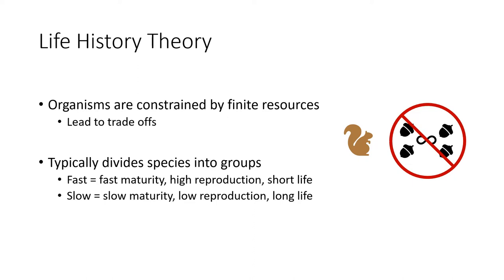Life history theory is typically used to generalize a species' average lifetime, based on the fact that organisms are constrained by a finite amount of resources, which lead to trade-offs where they must decide where to allocate available energy. Typically, species are divided into either fast or slow life histories, generally based on the speed of maturity, their reproductive output, and their lifespan.